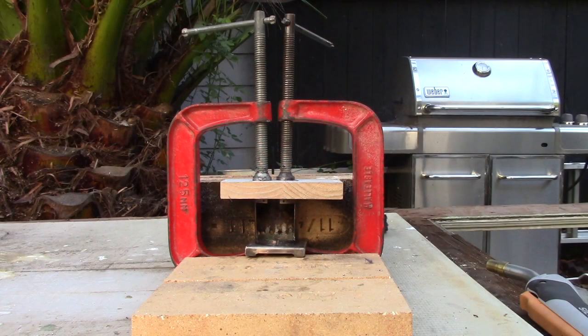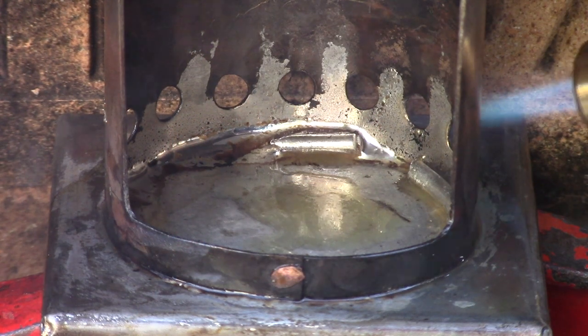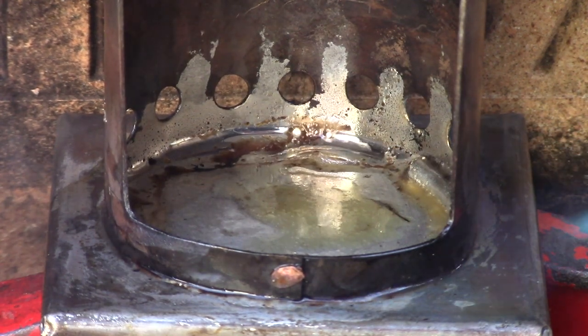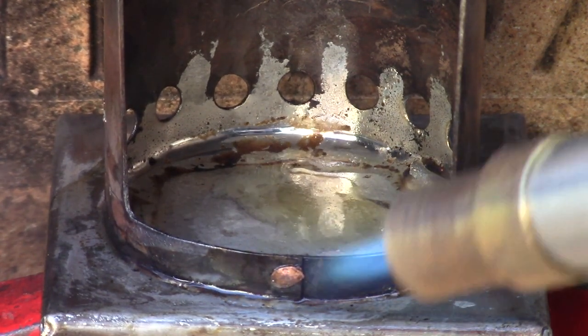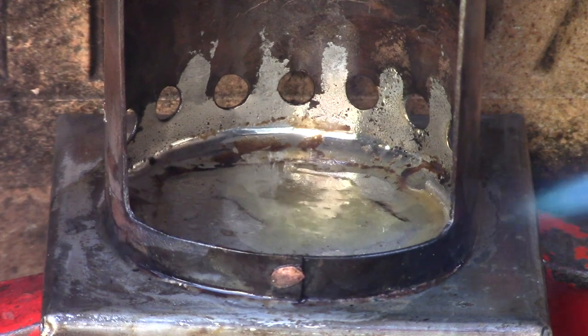The firebox and the stand are soft soldered together using C-clamps to keep the parts mated together. After fluxing, pieces of soft solder are cut to length and placed around the joint. The firebox and stand are heated until the solder flows, forming a seam.